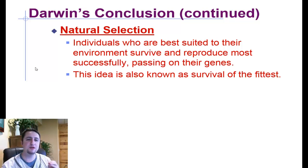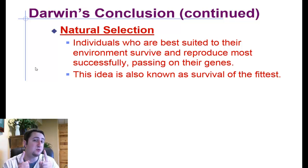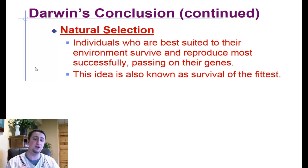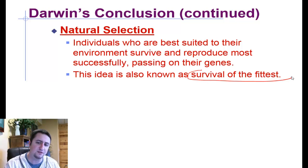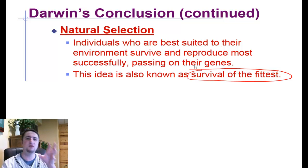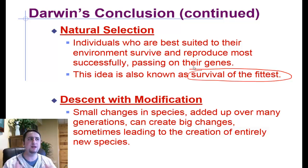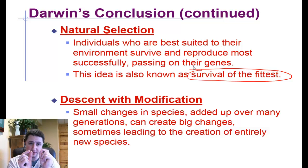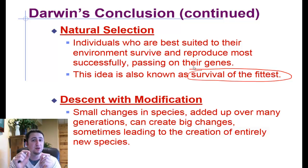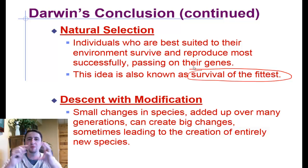Thus is born the theory of natural selection. Charles Darwin noticed that individuals that are best suited to their environment survive and reproduce most successfully. And because they reproduce, they pass along the genes for those capabilities of surviving easier. And this idea is also known as survival of the fittest — you may have heard of that phrase before. Charles Darwin coined that phrase. Basically, the ones that are more fit are more likely to survive. And he came up with this idea of descent with modification, where those small changes in species from parents to offspring — the ones that could survive easier — would then pass along their genes.